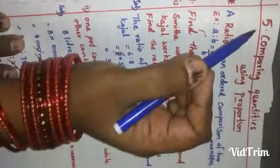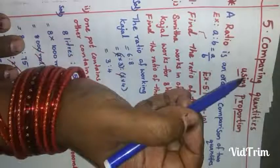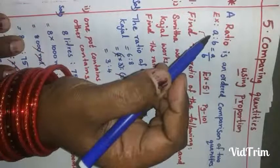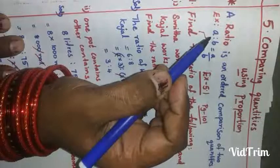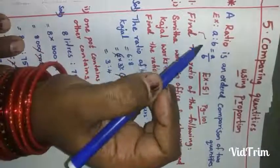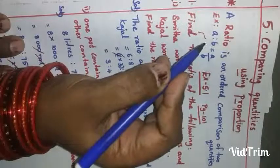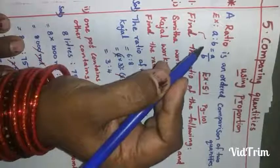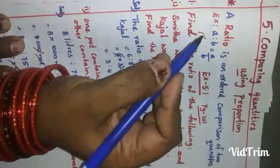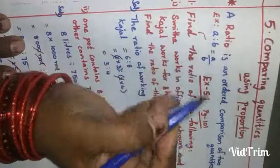Good morning children. Today we are going to start a new chapter: comparing quantities using proportion. Already we have seen the definition from previous classes — the definition of ratio. A ratio is an ordered comparison of two quantities. It is denoted by two dots: a is to b, or in fraction form, a by b. The first one is called the antecedent and the second number b is called the consequent.